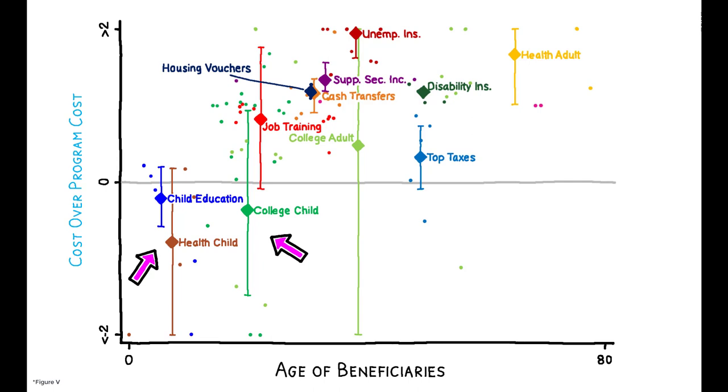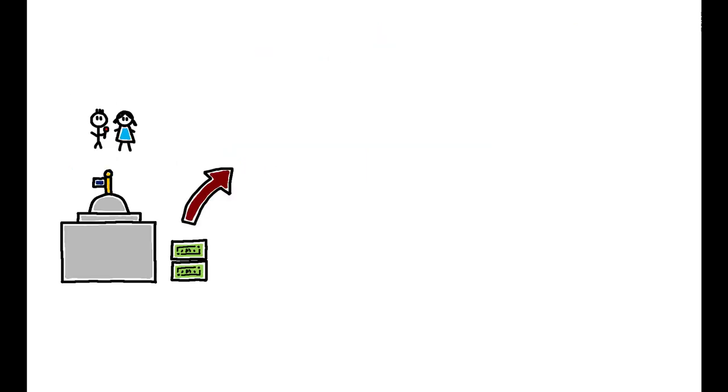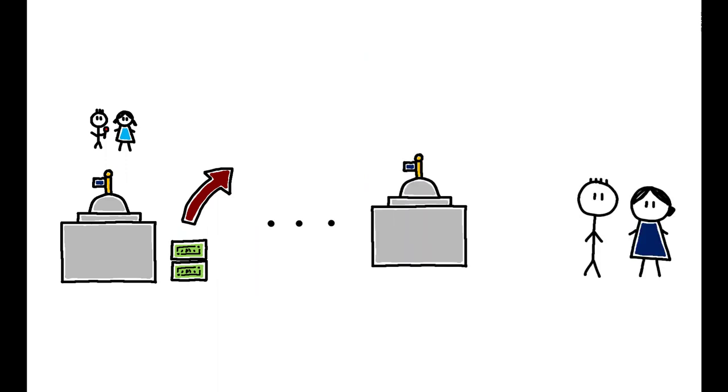As with the FIU example, the child beneficiaries of these programs often have higher earnings in adulthood and end up paying back the initial cost through higher tax revenue.